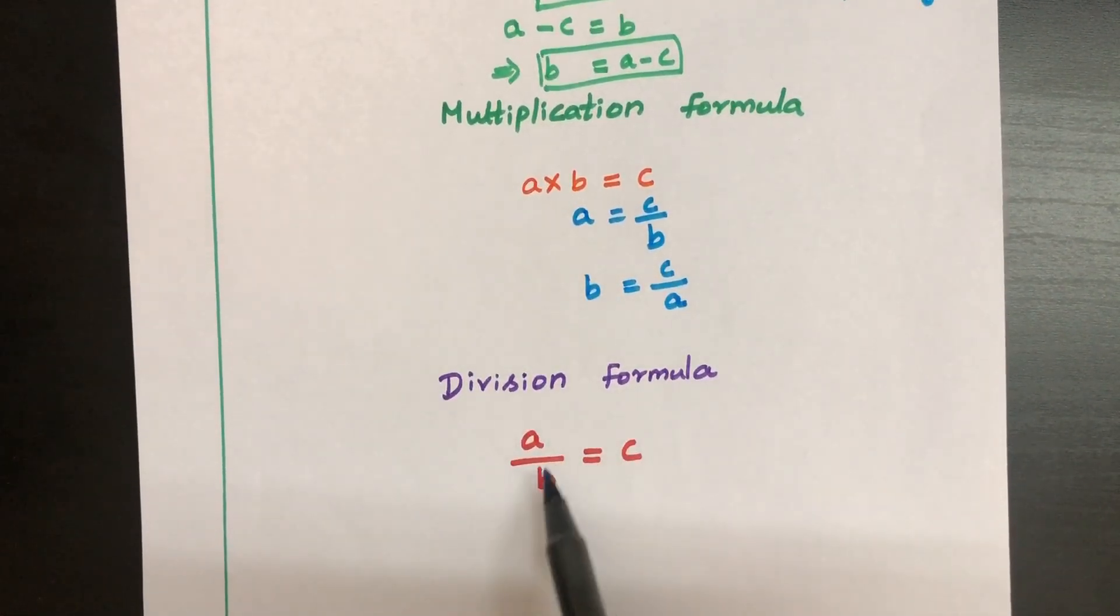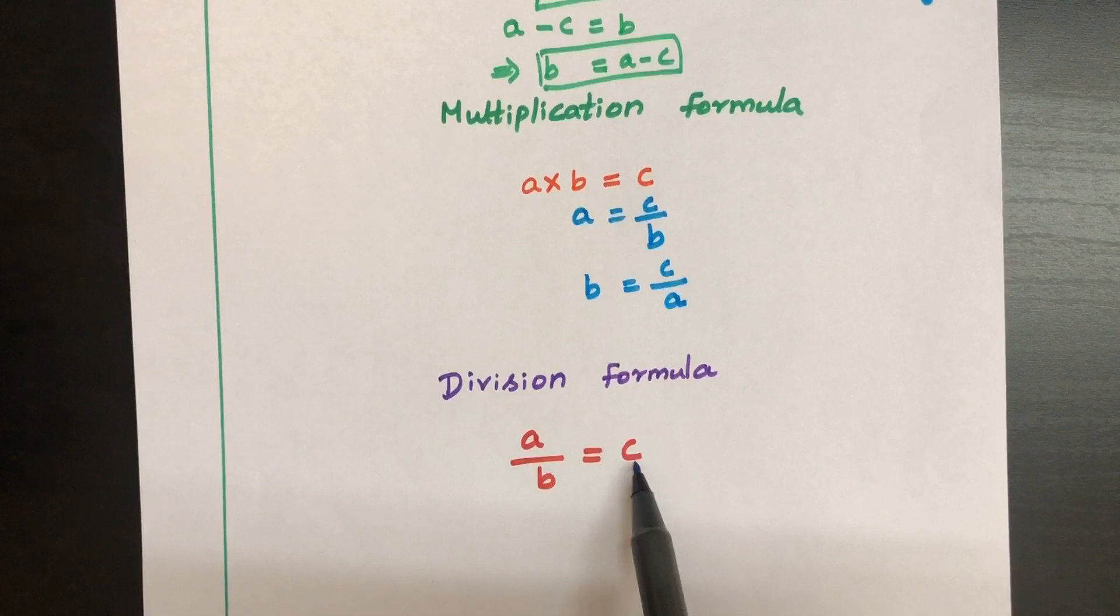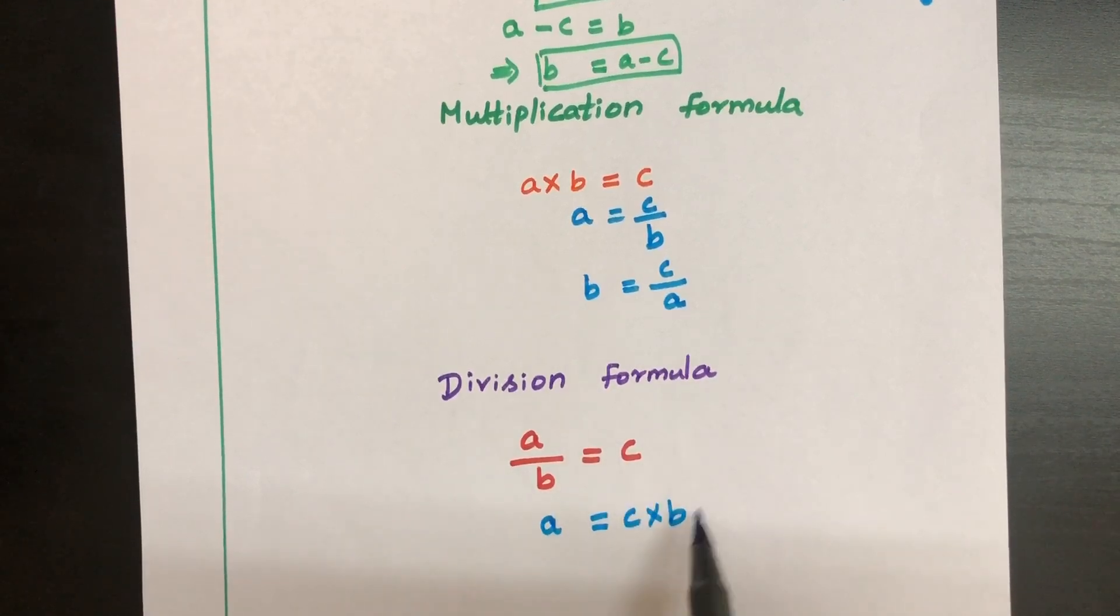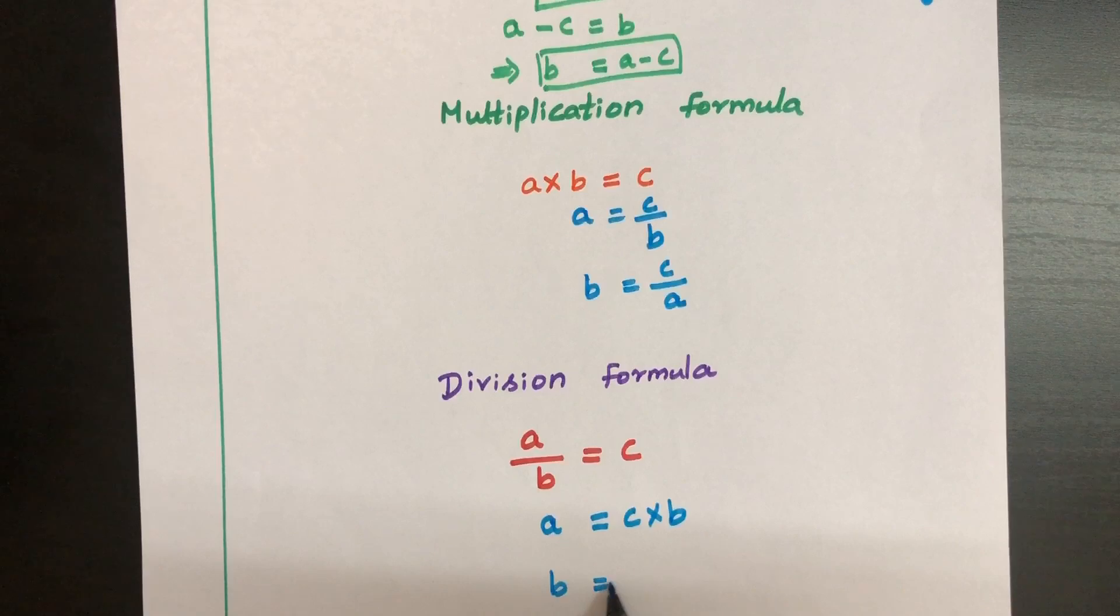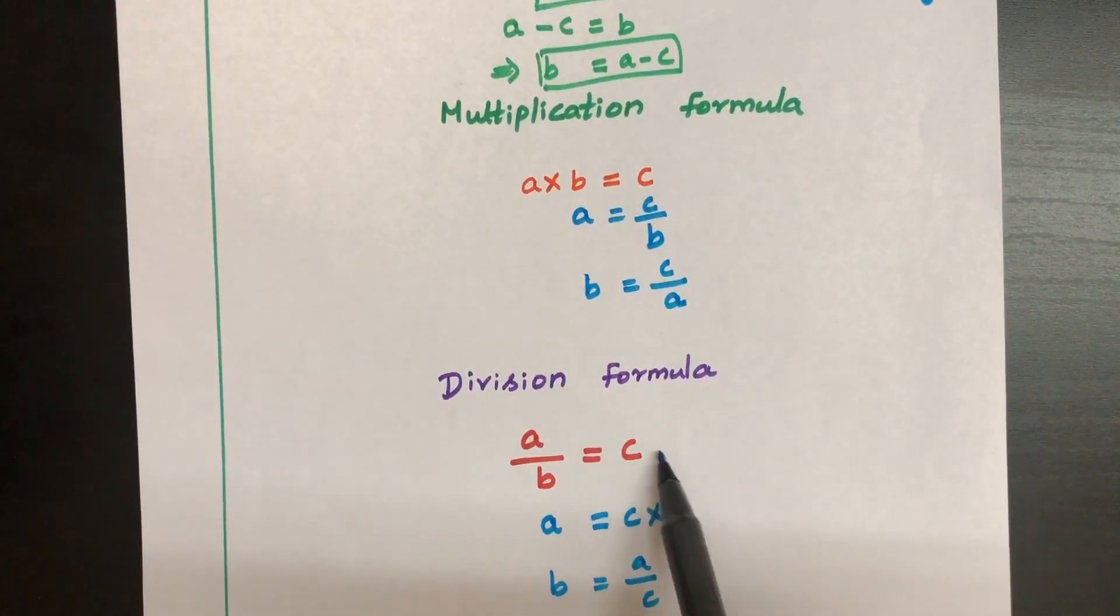Next division formula. A by B equal to C. If you want to know A, A is equal to C into B. If you want to know B, from here you can solve. So B is equal to A divided by C. Just cross multiplication. So A is equal to C into B here.